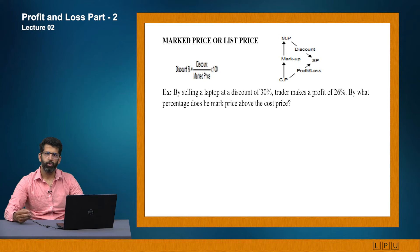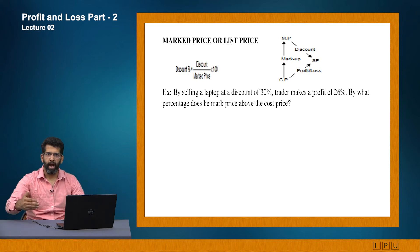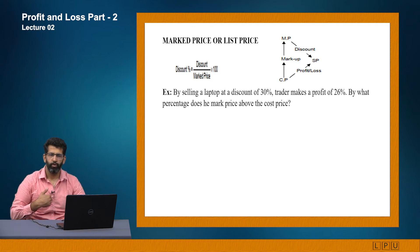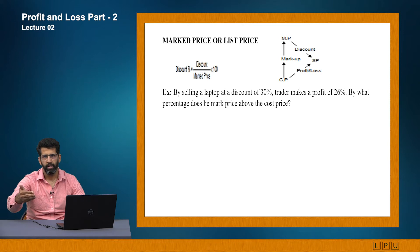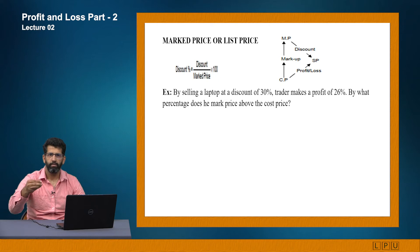Whenever you go to a shop, you find a tag price on any article. That tag price is called either mark price or list price. Mark price is something which is above the cost price. As a merchant, whenever I purchase any article for 1000, I will mark its price up and paste that price on the article — that is mark price. We also call it MRP in India. That is the price at which a merchant is willing to sell the product to the customer.